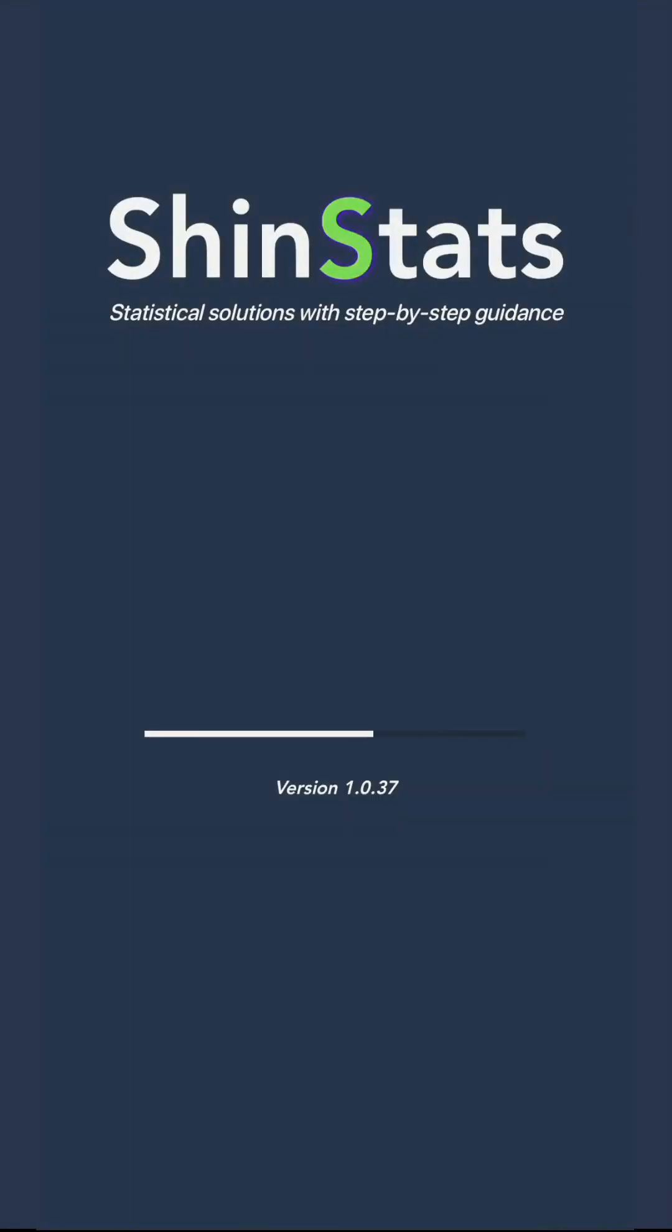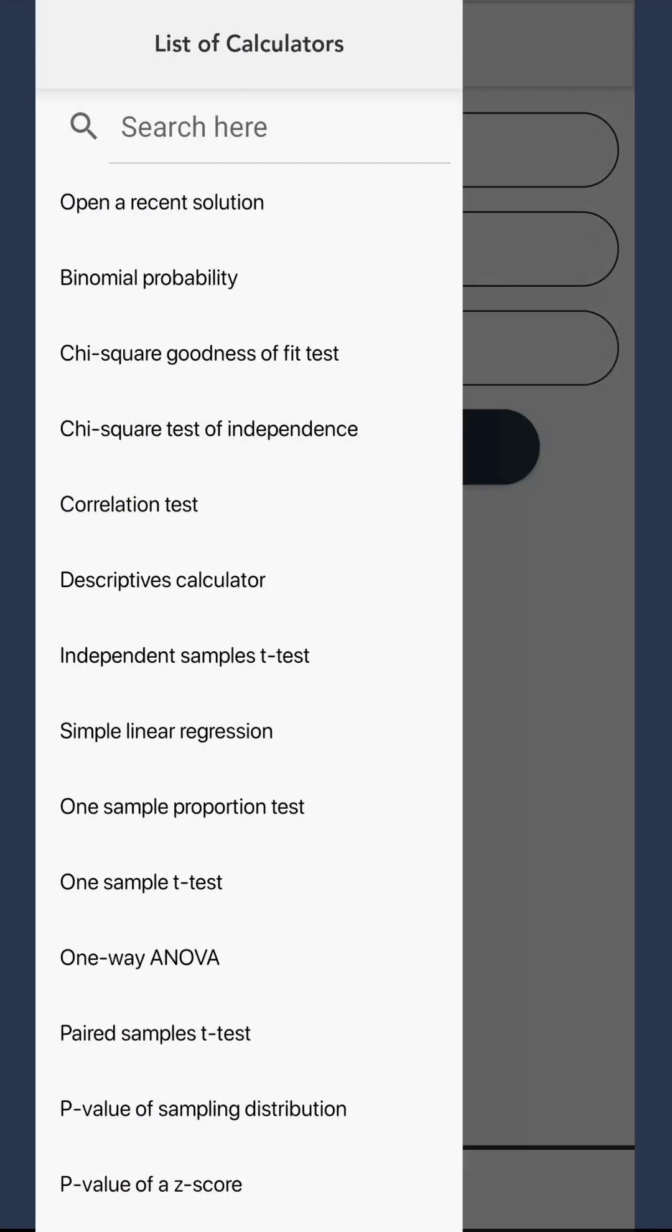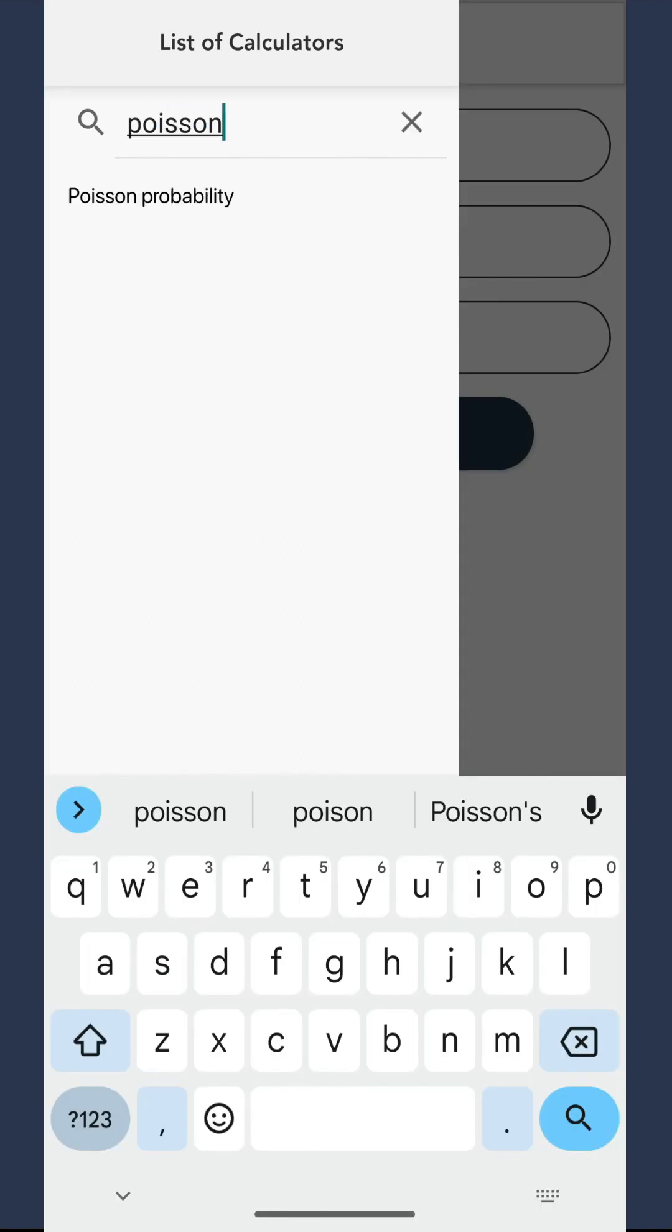Begin by launching the app. Head to the menu bar and click on it. And here's a quick pro tip. To make things even easier, use the search bar. Just type Poisson and voila! It will lead you straight to the calculator.